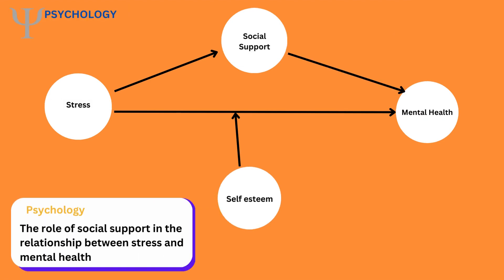In this psychological study, we investigate the function of social support in the relationship between stress and mental health, as well as how self-esteem modifies this process. Stress is the independent variable that influences mental health and social support. Social support functions as a mediator, helping to clarify the link between stress and mental health. Self-esteem acts as a moderator, altering the strength of the link between stress, social support, and mental health.